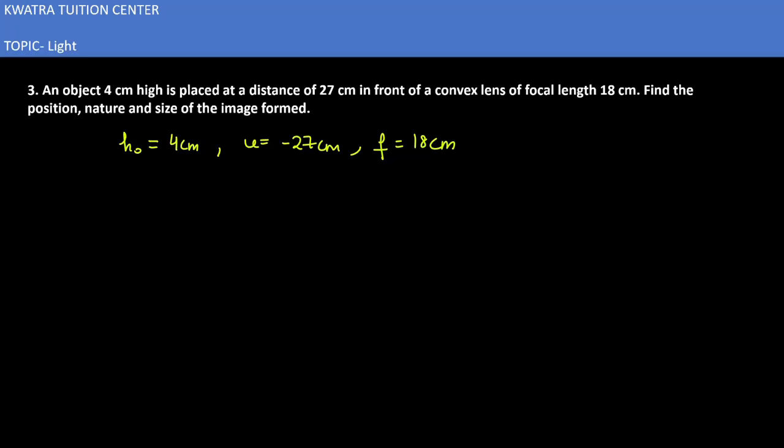Now what do we need to do? Use lens formula. If you have u and f, v can be found with the help of lens formula. 1 over f equals 1 over v minus 1 over u.